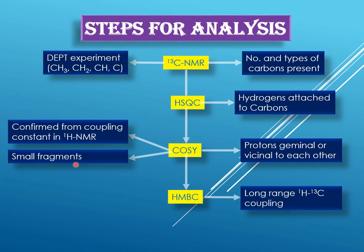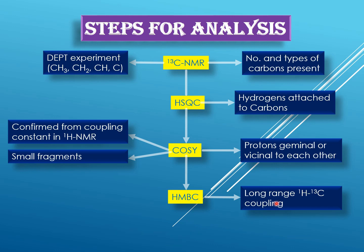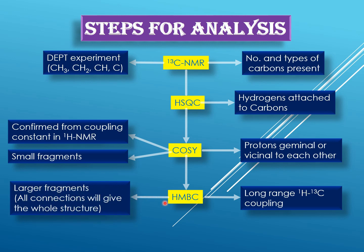To connect these small fragments, you need another technique: HMBC — Heteronuclear Multiple Bond Correlation — which is also a heteronuclear technique giving you long-range proton and carbon-13 couplings. It provides two-bond and three-bond couplings (and occasionally four-bond couplings). COSY is a homonuclear technique showing proton-proton correlation and gives smaller fragments; HMBC shows proton to carbon-13 correlation and joins those fragments together into larger fragments. Connecting all these fragments gives you the whole structure.